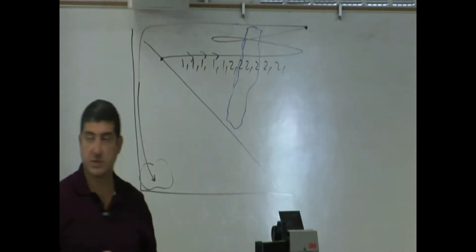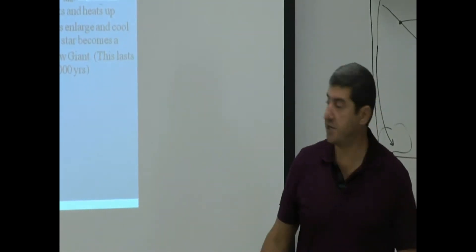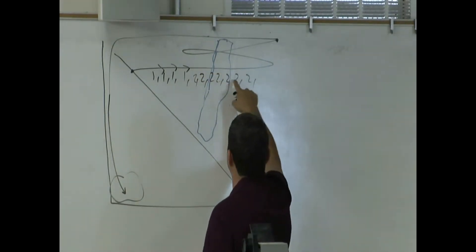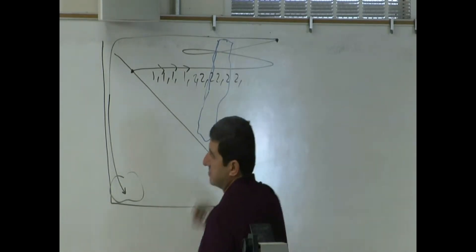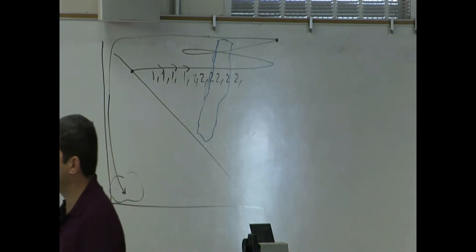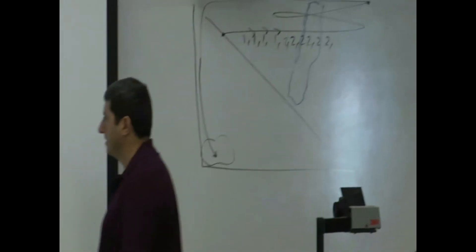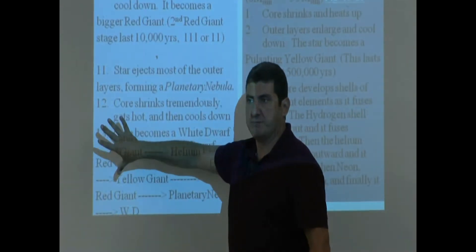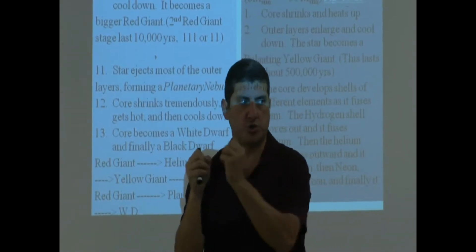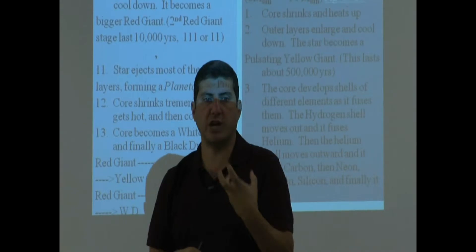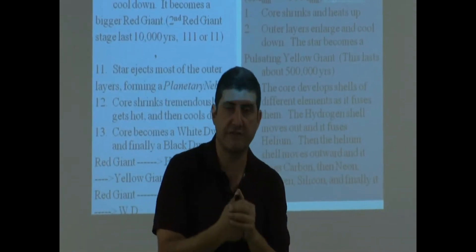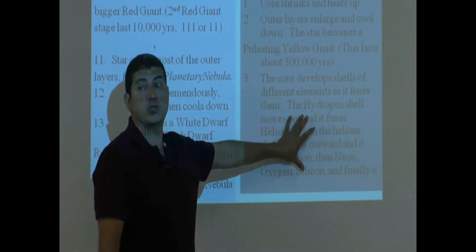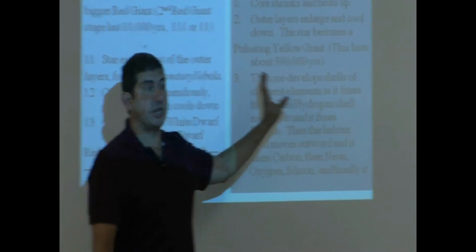It starts pulsating. It could even be a yellow giant around here, but then it will start pulsating when it's going through the middle. And then over here it's going to start turning to a red giant. The core develops shells of different elements as it fuses them. The hydrogen shell moves out and it fuses helium. With the other kind of stars — the light or medium mass stars — they had to have a special event known as the helium flash, and then they get hot enough to turn helium into carbon.